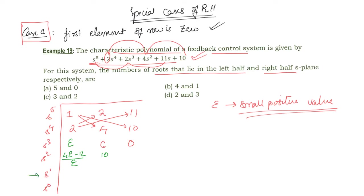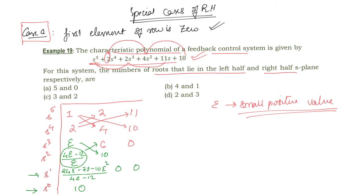In the next row, we multiply and subtract values as usual. We get (24ε − 72 − 10ε²) / (4ε − 12), and the remaining elements are 0 and 0. The last element in the s⁰ row is 10.